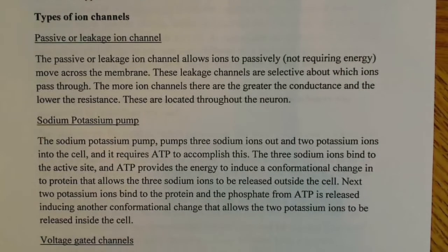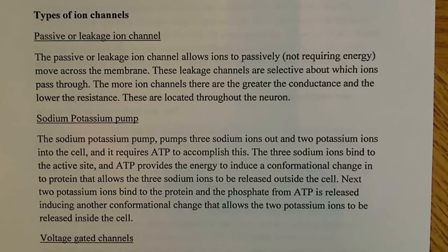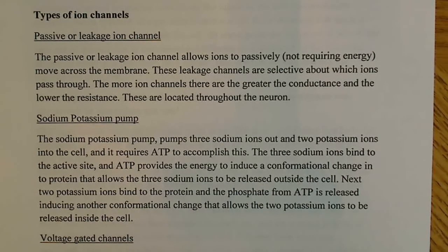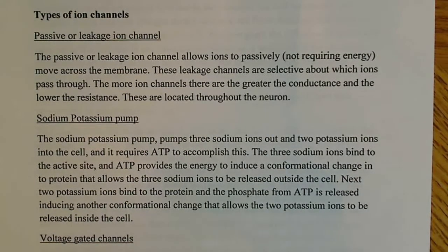The first one is called a passive or leakage ion channel. The passive or leakage ion channel allows ions to passively — meaning without requiring energy — move across the membrane, usually without ATP. These leakage channels are selective about what ions can pass through, so there's some level of selection. The more ion channels there are, the greater the conductance and the lower the resistance. These are located throughout the neuron.